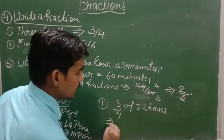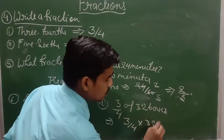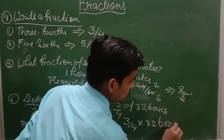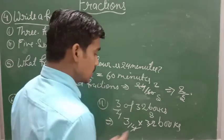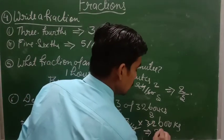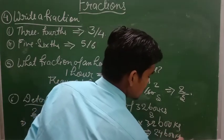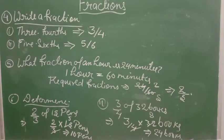And there 3 by 4. 3 by 4 into 32. 4 into 8 is 32, and 4 into 2 is 8. So 3 into 8 is 24.